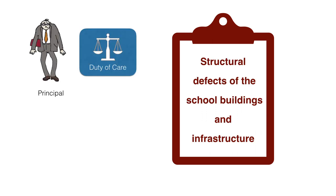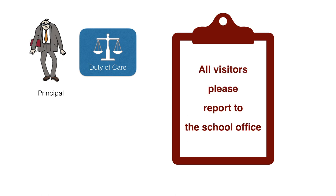When accidents arise as a result of structural defects of school buildings and infrastructure, the liability rests with the occupier of the premises, who is generally the school. The school board may limit the ambit of its potential liability for third persons by express agreement or by prominently displaying notices at the entrances of school premises, which bring attention to the issue, on the condition that they are reasonable in all the circumstances.